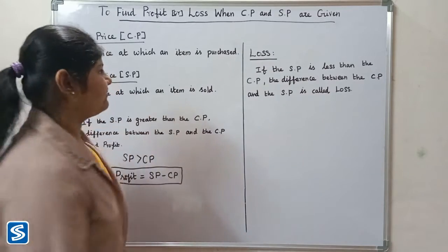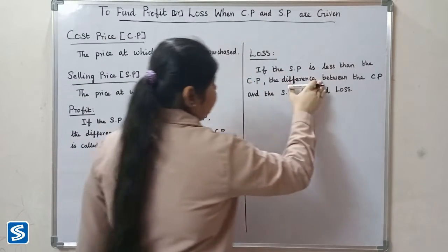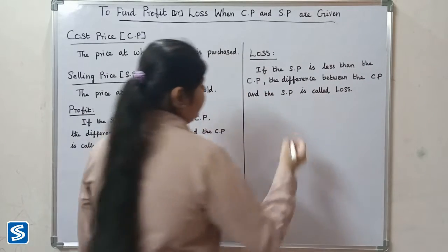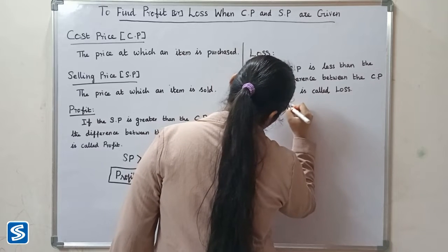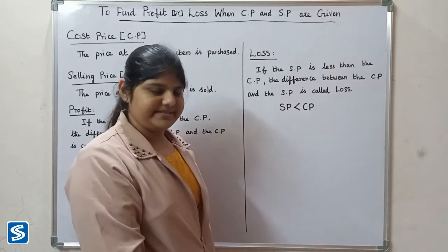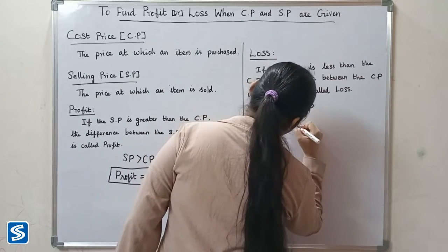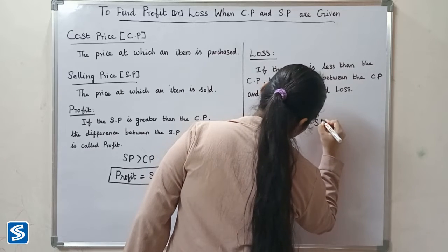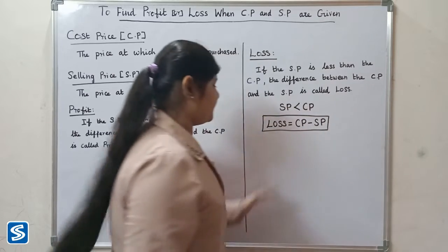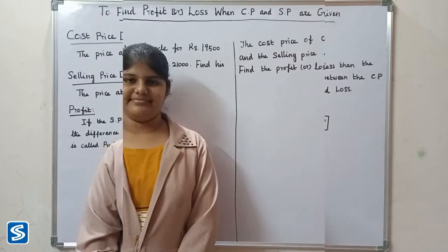Loss means if the selling price is less than the cost price, the difference between the cost price and the selling price is called loss. That is, if selling price is less than cost price, then we will have loss. So loss is equal to cost price minus selling price. This is the formula for finding loss.